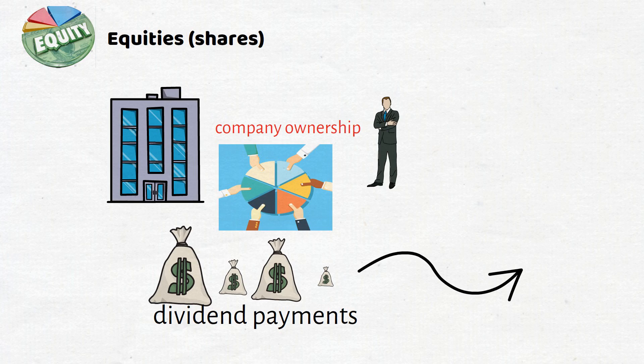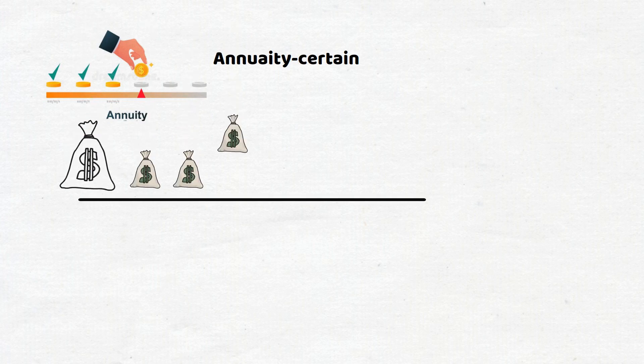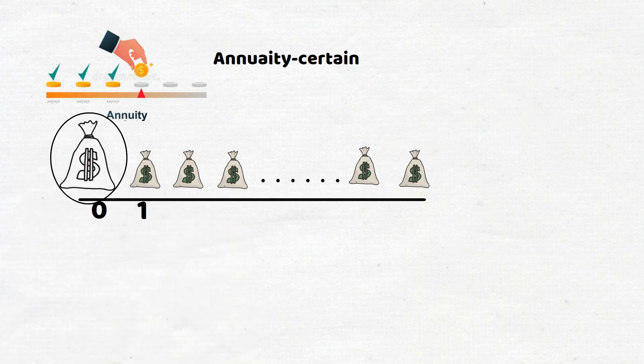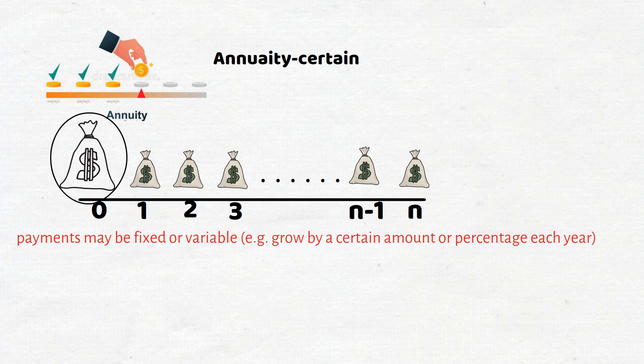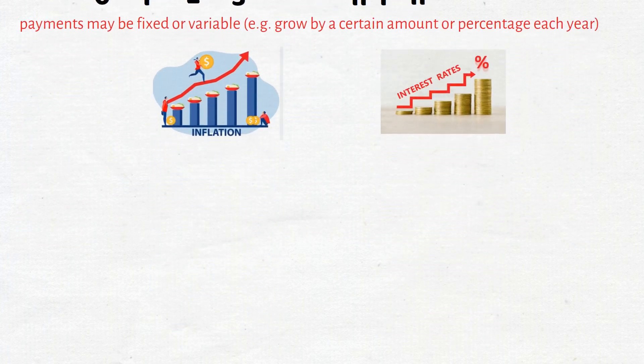An annuity is a financial product that provides a series of regular payments to the investor in exchange for a single premium paid upfront. The duration and frequency of the annuity payments are predetermined. The payments may be fixed or variable depending on the terms of the annuity contract; variable payment options may be based on factors like inflation or interest rates. With a certain annuity, we know in advance how much will be paid out and for how long, as the term and payment amounts are fixed.